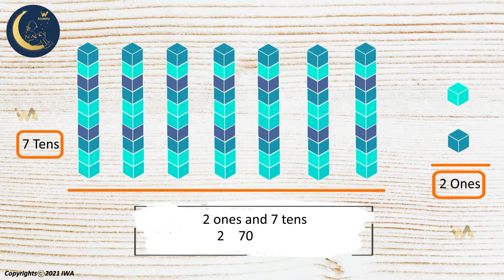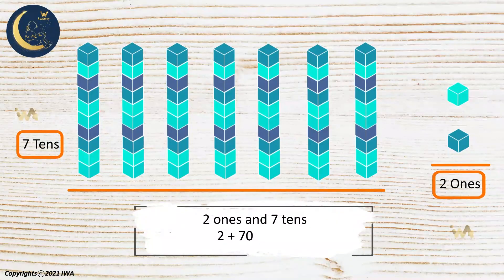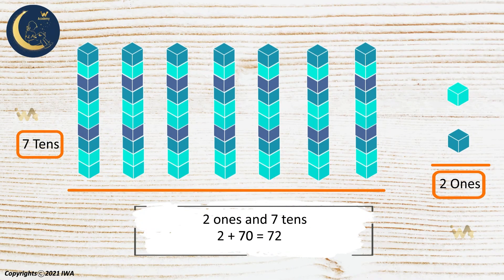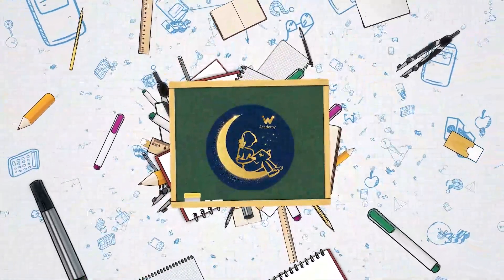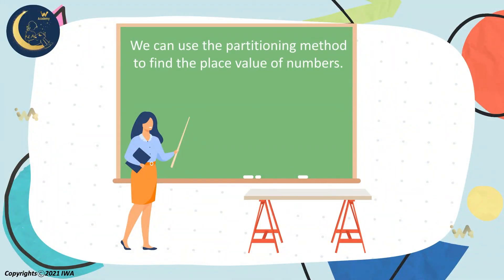Using the partitioning method, we get two plus 70 equals 72. We can use the partitioning method to find the place value of numbers.